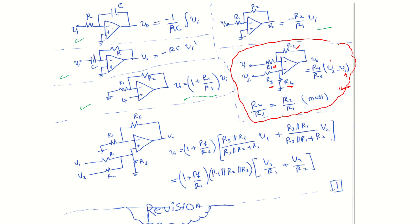Now, what about the summer circuit? Here we have more than one input. This is RF — the feedback resistance — and RS is the series resistance. We can have V1, V2, V3, V4 with corresponding resistors. If you write V output using the formula, you apply the non-inverting gain times VI, where VI is obtained using the voltage division rule.